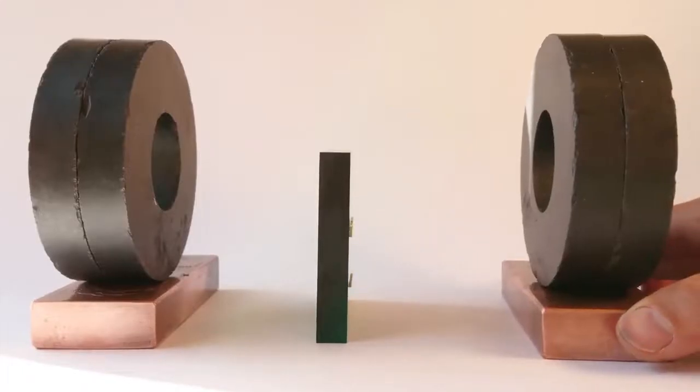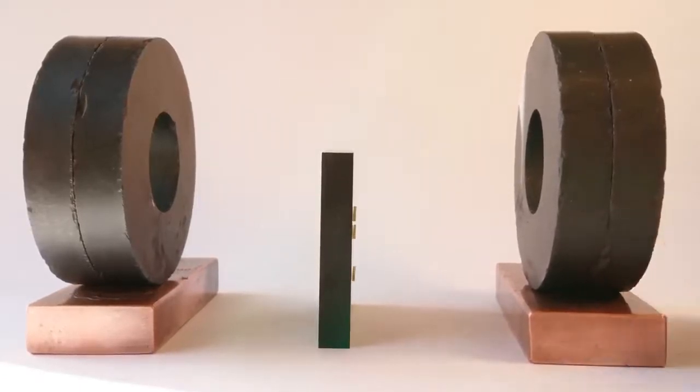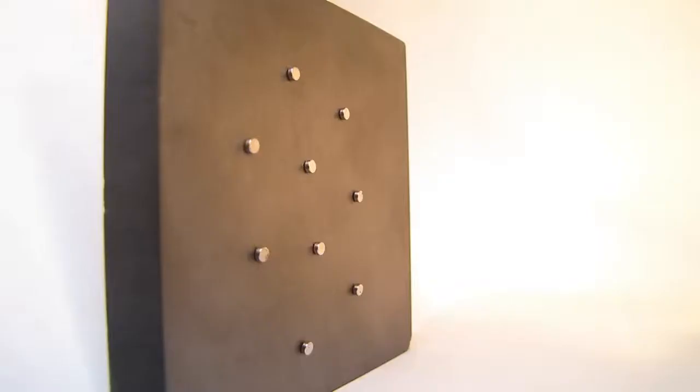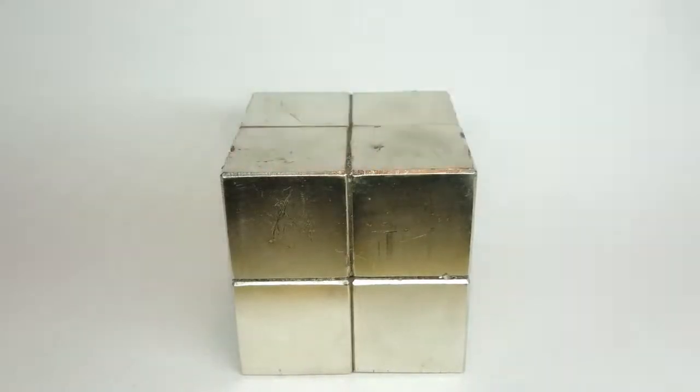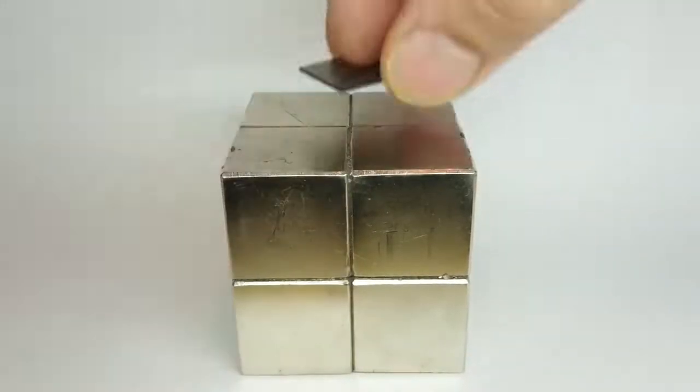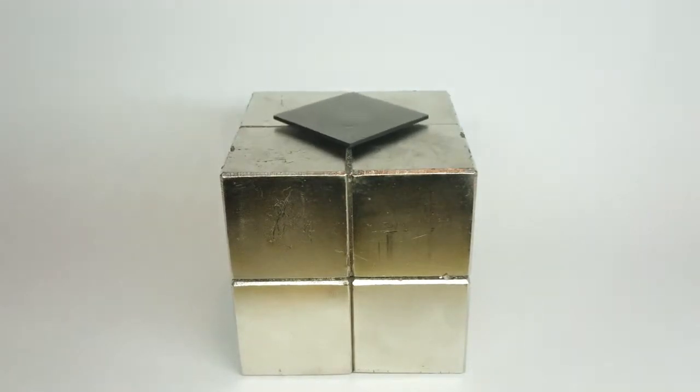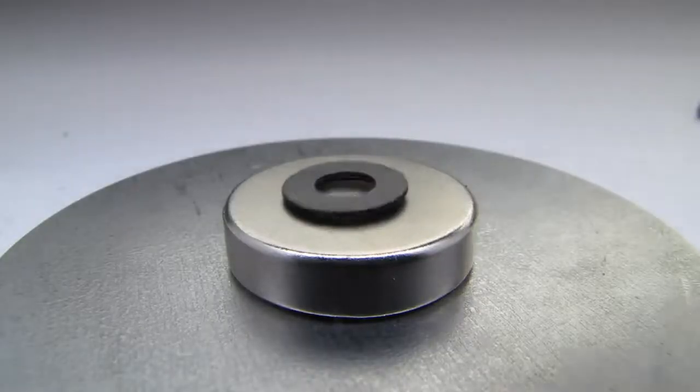Pyrolytic graphite is the most diamagnetic substance known to man. A thin enough piece of pyrolytic graphite will levitate over a magnetic array. The diamagnetic repulsion is greater than the weight of the graphite. The amount of lift is proportional to the density of the magnetic flux around the graphite.